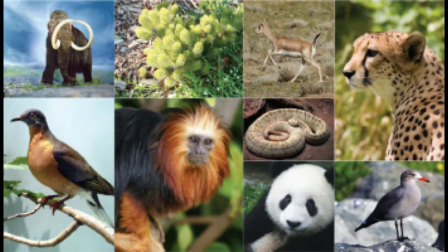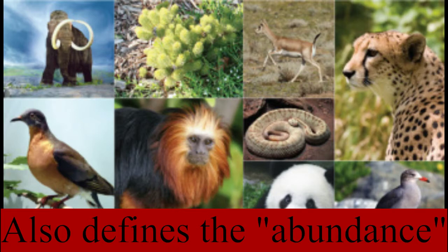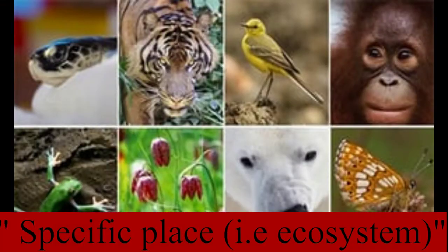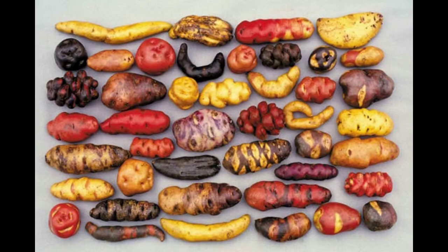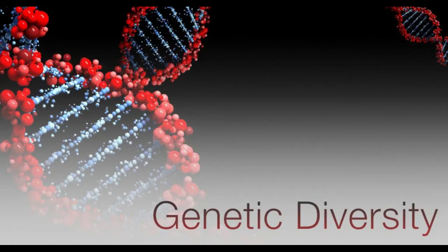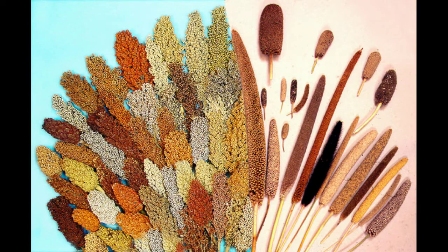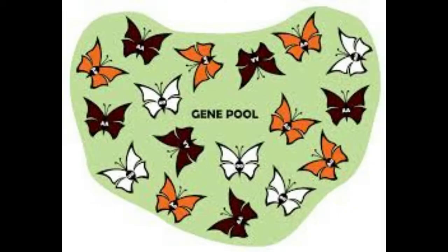Species diversity defines the abundance or the amount of different species living in a specific place. Look at these carrots, now look at these potatoes — they're colorful, aren't they? This is what genetic diversity is. Another way to explain genetic diversity is the variety of genetic material in the gene pool of the population.